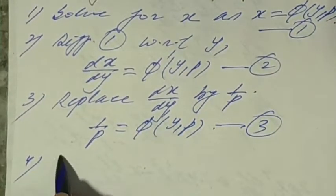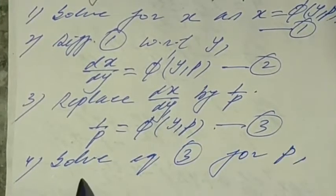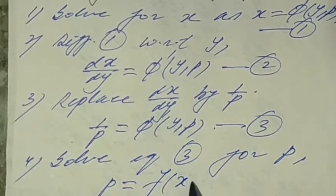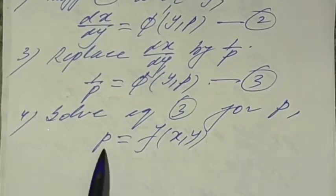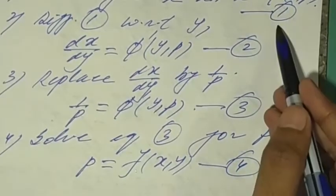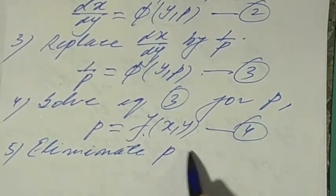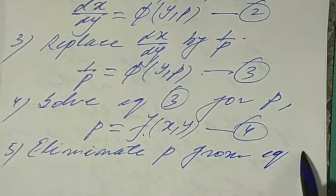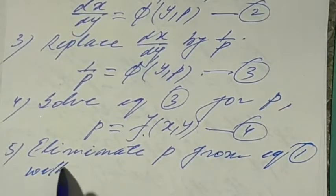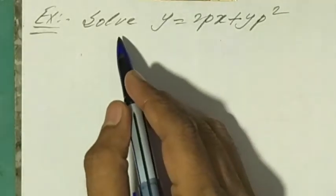Step 4: solve equation 3 by a suitable method to get p as a function of x and y — equation 4. Final step: eliminate p from equation 1 using equation 4. Let us take an example: y = 2px + yp².